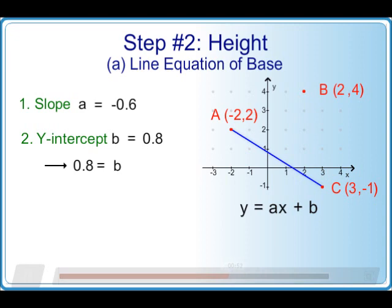So the equation of line AC is y equals minus 0.6 times x plus 0.8.